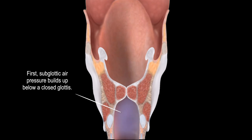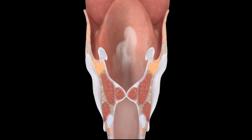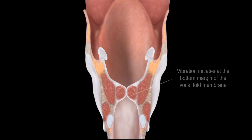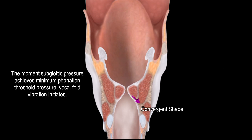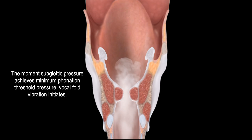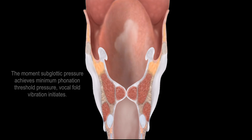Tracheal air pressure builds up below the adducted vocal folds as air is pushed up from the lungs. As the tracheal air pressure increases, it overcomes the resistance of the closed vocal folds, causing them to slightly part beginning from the lower margins and forming a convergent shape. The minimum air pressure required to initiate vocal fold vibration is known as the phonation threshold pressure.